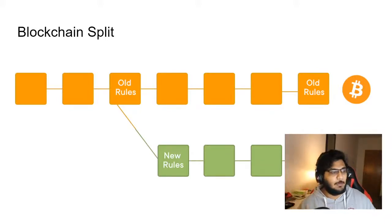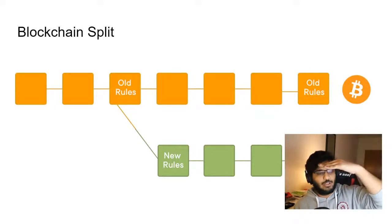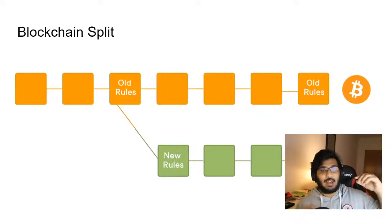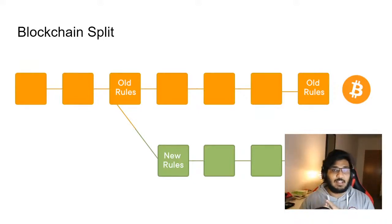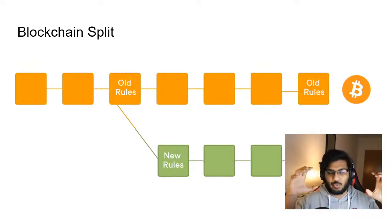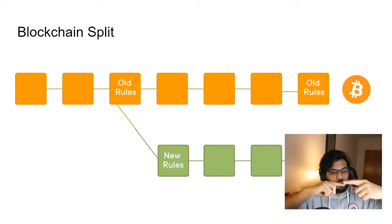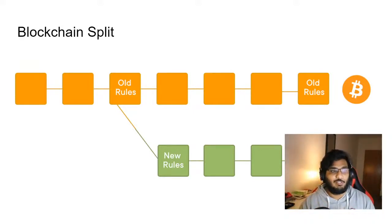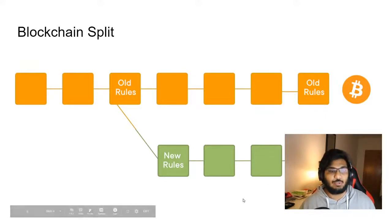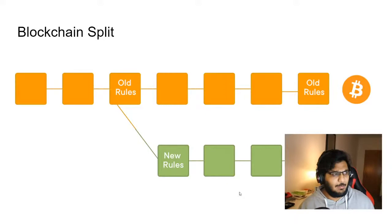A blockchain has rules — block time, block size, block rewards — these are the rules of the protocol. Every time you have new blocks, it follows that protocol. But if you want to upgrade, meaning new rules, you need to create a fork. You fork from the old rules to the new rules.